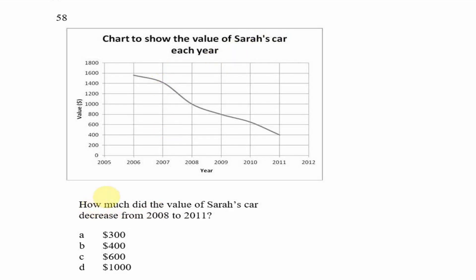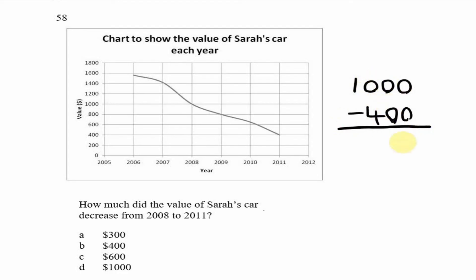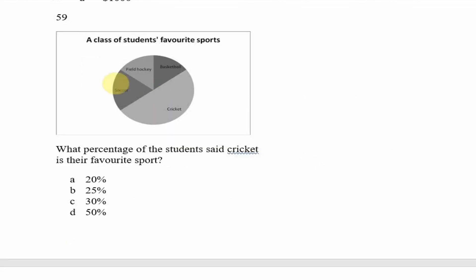Question 58 — a chart showing the value of Sarah's car each year. The question asks how much the value decreased from 2008 to 2011. In 2008 the car was worth 1,000, and by 2011 it had fallen to 400. Subtracting 400 from 1,000 gives us 600, so the car decreased by 600, which is option C.